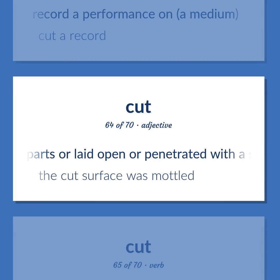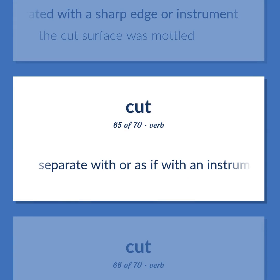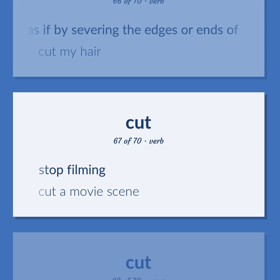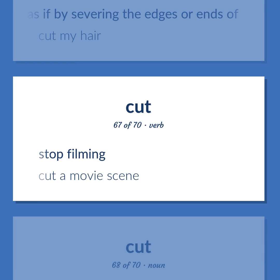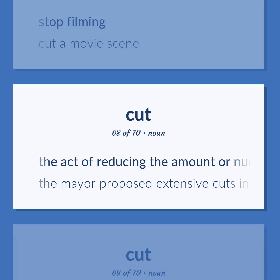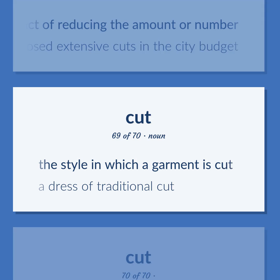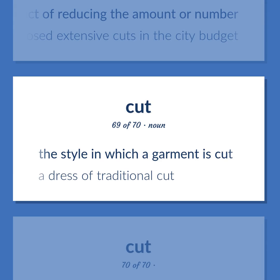Cut (adjective/verb): Separated into parts or laid open with a sharp edge — the cut surface was mottled. Separate with or as if with an instrument. Shorten as if by severing the edges or ends of — cut my hair. Stop filming — cut a movie scene. The act of reducing the amount or number — the mayor proposed extensive cuts in the city budget. The style in which a garment is cut — a dress of traditional cut.